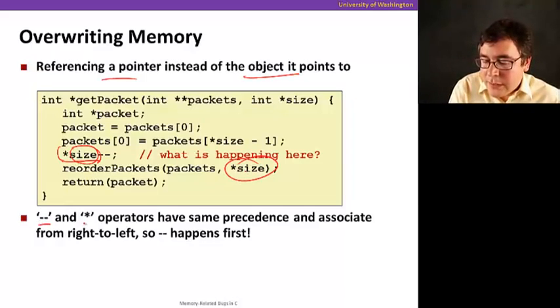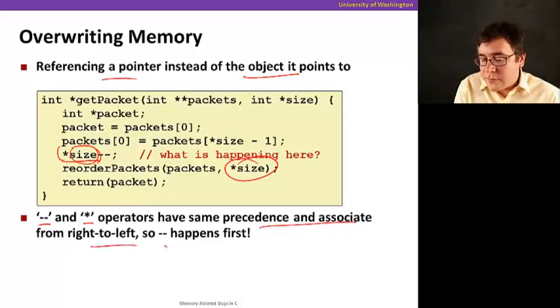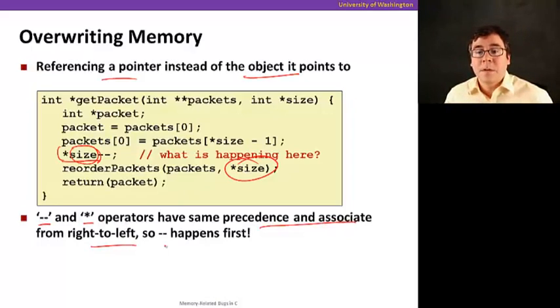So I'm just pointing somewhere, and then when I pass that parameter, I'm not going to get what I expect. We're going to be pointing whatever comes before size in memory. And that's because the operators minus minus and star have the same precedence, and therefore, we go from right to left. So the decrement happens first. That's not what was intended. So be careful when you use these operators.